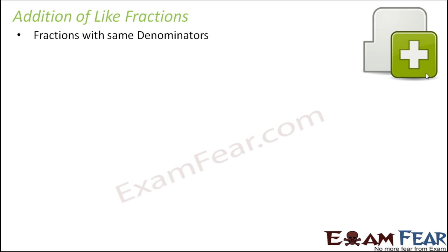Again whenever we deal with like fractions with same denominators things are pretty simple. So all we need to do is retain the denominator. Let us suppose these are the 2 like fractions that you have. Let us say 3/5 and 16/5. So these are the 2 like fractions which need to be added. So what we do we retain the denominator.